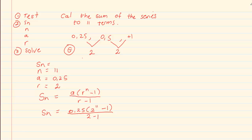So we've got 0.25 open brackets 2 to the power 11 minus 1 close brackets over 2 minus 1 giving us Sn is equal to 511.75. Now you must be careful as to how they ask these questions. Sometimes they don't ask it straightforward like this.